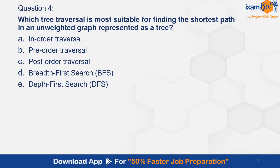Question 4. Which tree traversal is most suitable for finding the shortest path in an unweighted graph represented as a tree? Option A. In-order traversal. B. Pre-order traversal. C. Post-order traversal. D. Breadth-first search. E. Depth-first search. And the correct answer is D — breadth-first search.